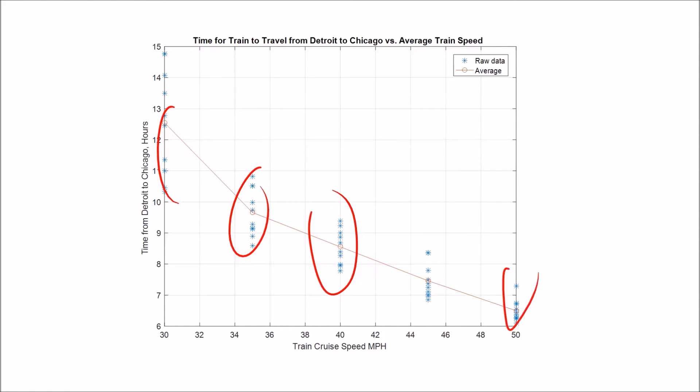This is the data we had. If you recall from the previous video, we had trains that had different top speeds from 30 to 50 miles an hour, and we had collected historical data on the time it took the trains to get from Detroit to Chicago.